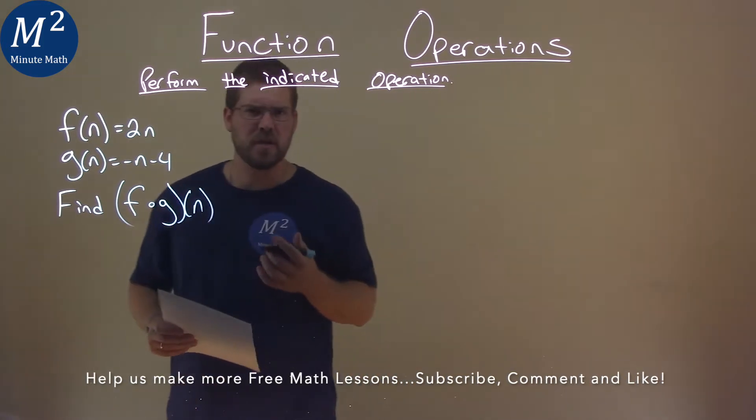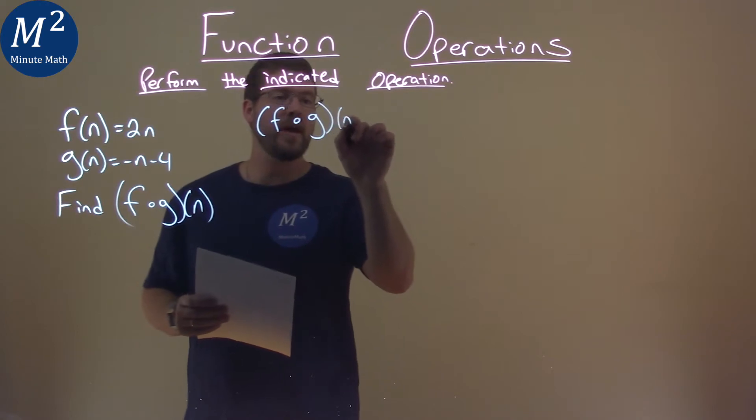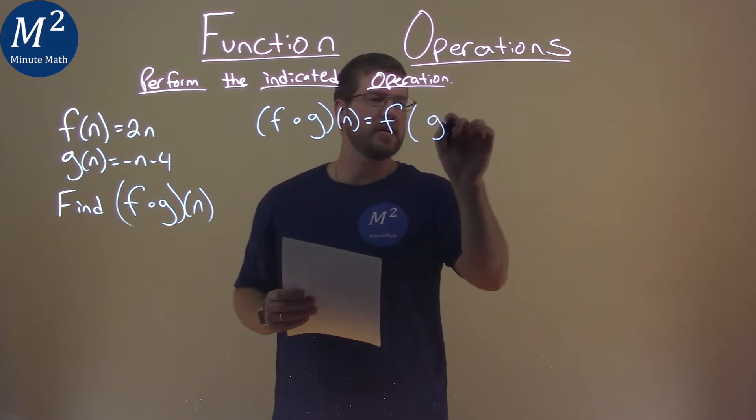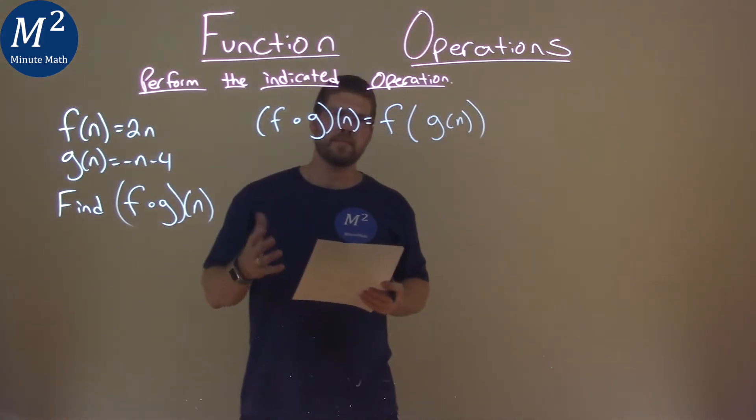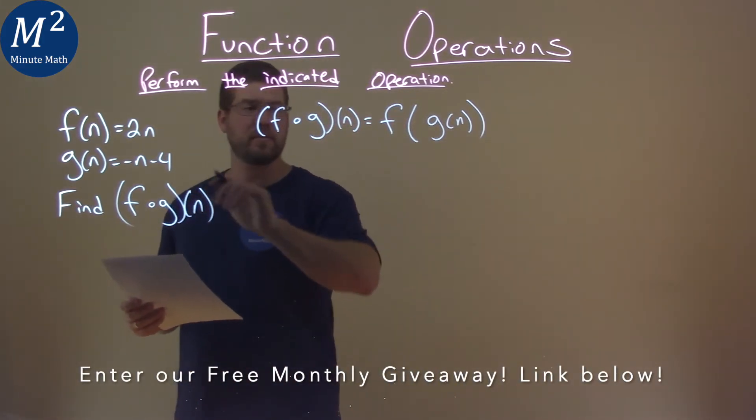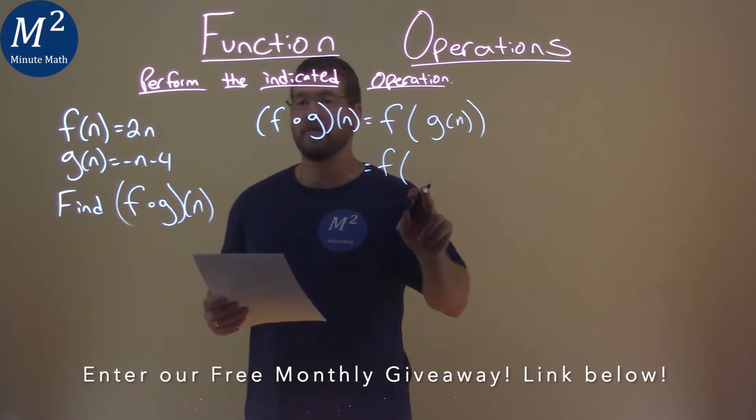But what is f of g of n? This means we first take our g of n, our whole function, which is negative n minus 4, and we're going to plug that in for the n value of our function f.